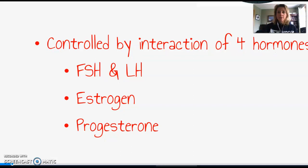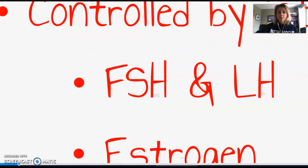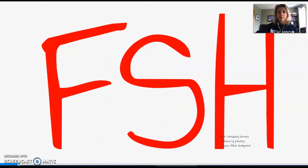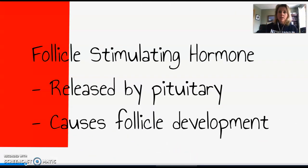There are four different hormones that are going to regulate the events of both of these cycles. Our first hormone is FSH, or follicle-stimulating hormone. It is secreted by the pituitary gland, and it is going to stimulate follicle development. Follicles start off small as primary follicles, and then they become larger as the cycle goes on to become mature follicles, also known as Graafian follicles.